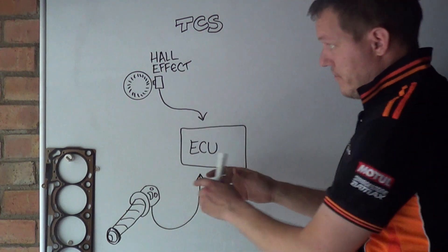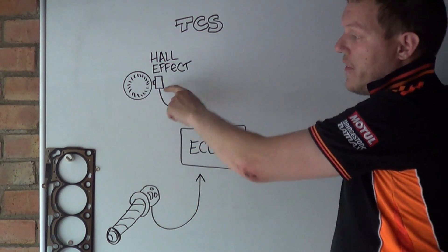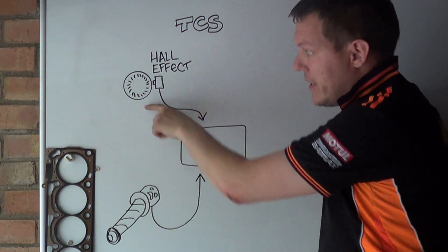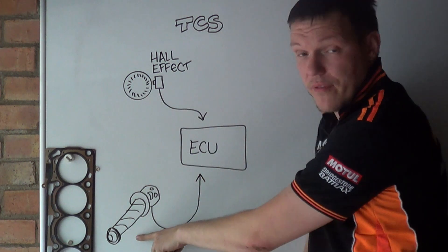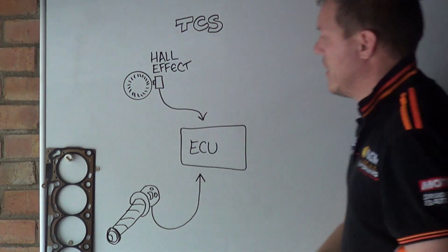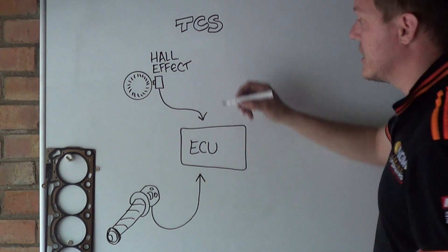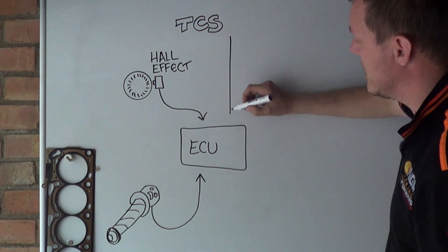So now what we have is we have a hall effect sensor, we have our wheel disc, our wheel speed disc, and we also have our throttle position sensor. And this is all sent to the ECU. And what the ECU sees...